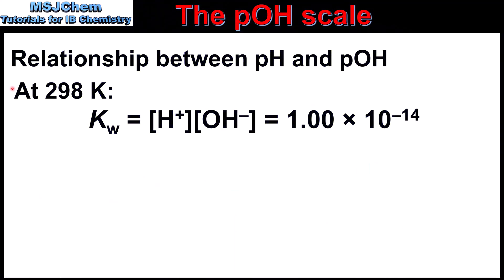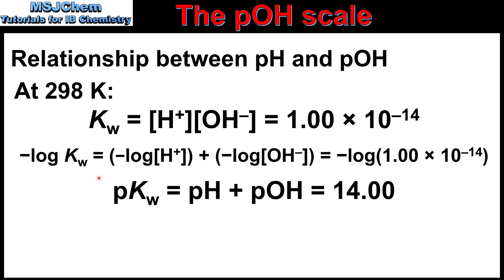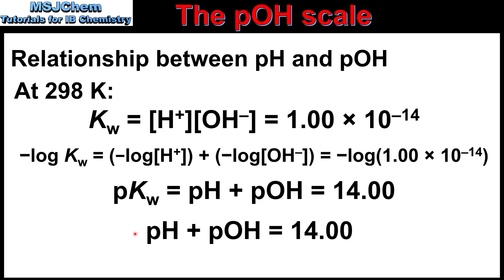Next we look in more detail at the relationship between pH and POH. Here we have the value of Kw at 298 K, which is 1.00 × 10⁻¹⁴. The Kw is equal to the concentration of hydrogen ions multiplied by the concentration of hydroxide ions. If we take the negative log of everything, we end up with the relationship shown: pKw is equal to pH plus POH, which is equal to 14 at 298 K. So at 298 K, the pH plus the POH of a solution is equal to 14.